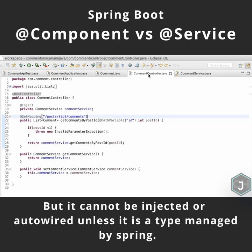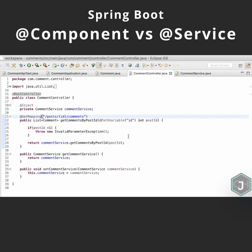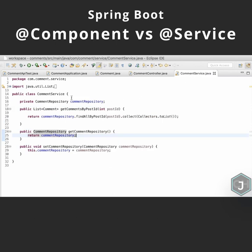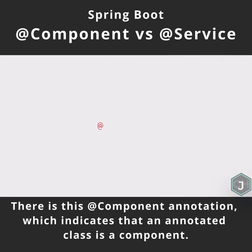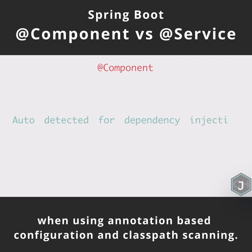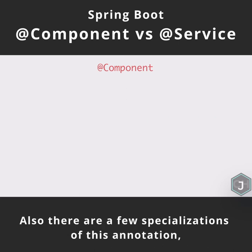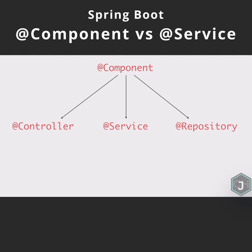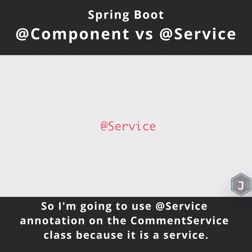But it cannot be injected or autowired unless it is a type managed by Spring. So how do we make the command service a Spring component? There is the @Component annotation, which indicates that an annotated class is a component. Such classes are considered as candidates for autodetection when using annotation-based configuration and classpath scanning. Also, there are a few specializations of this annotation, such as @Controller, @Service, and @Repository. So I'm going to use the @Service annotation on the CommentService class, because it is a service.